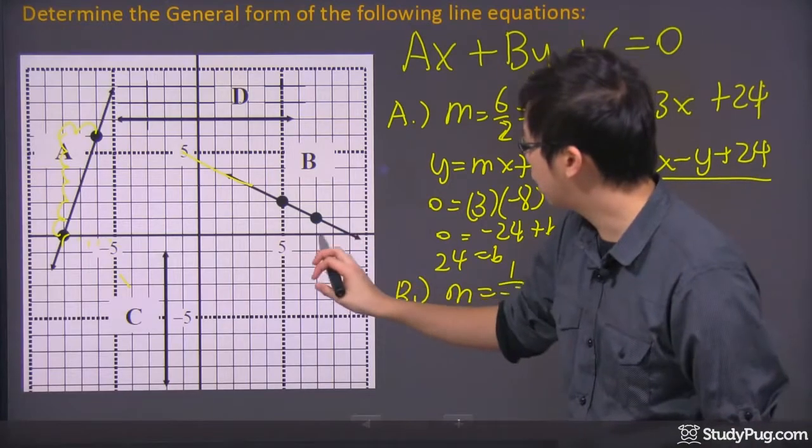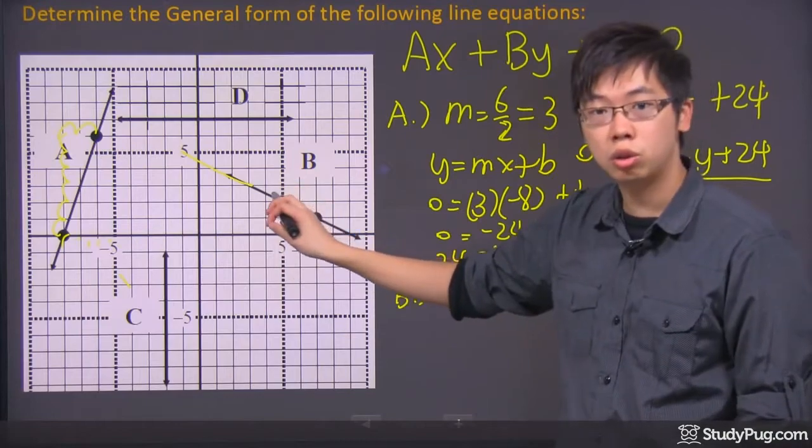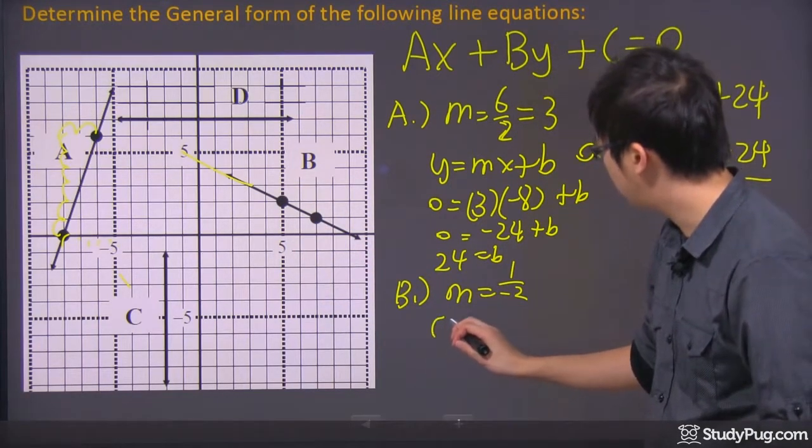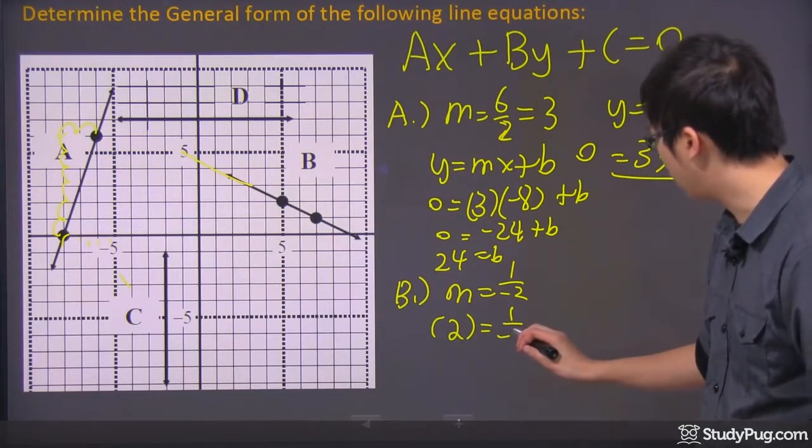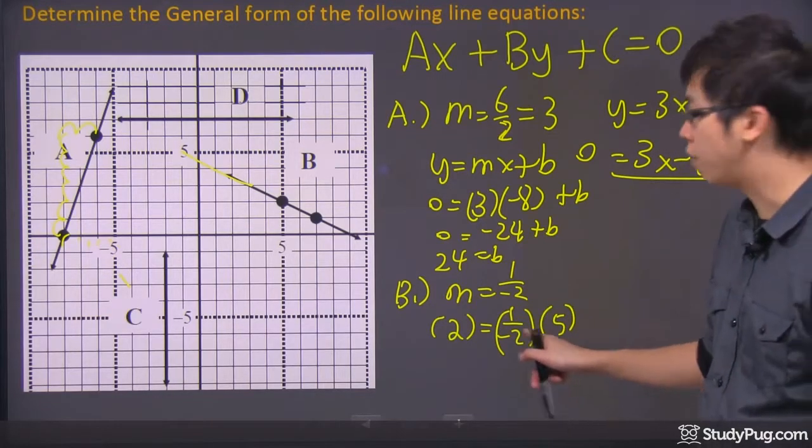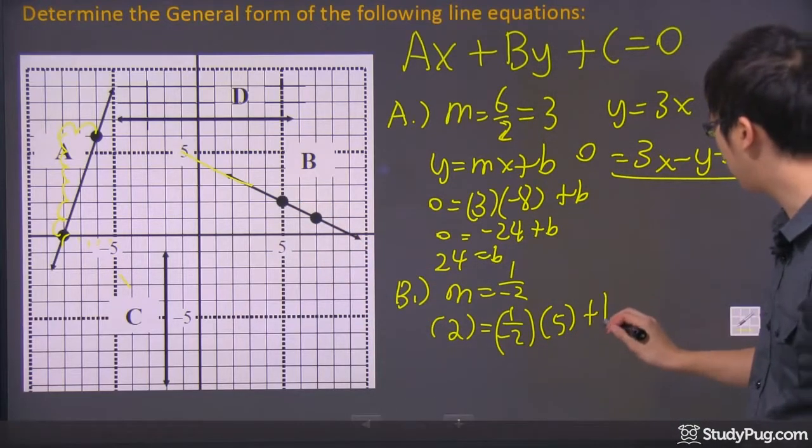But what about the Y-intercept? Let's say I'm not too sure about this point, which I actually don't know. But let's use one of the points that's given to me and actually figure out the equation first, figure out the B first. So I'm going to do this thing and I'm going to take this one. This is positive 5 and the 2. Positive 5 and the 2.